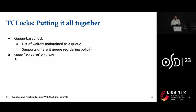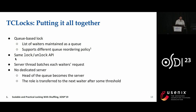Putting it all together, TCLock provides a queue-based delegation lock in which the list of waiters is maintained as a queue. The waiters can be reordered based on different policies. TCLock provides the same lock and unlock API to application developers. The TCLock server thread uses batching to execute waiter requests. There is no dedicated server thread — initially the head of the queue becomes the server, and after some time the server transfers the role to the next waiter.